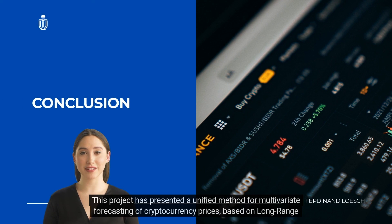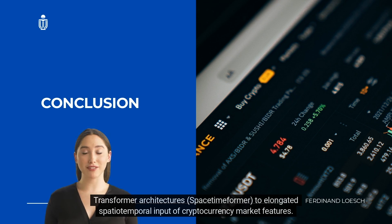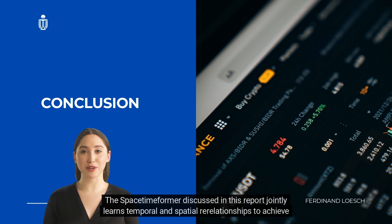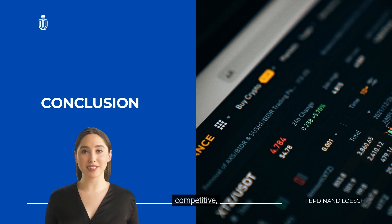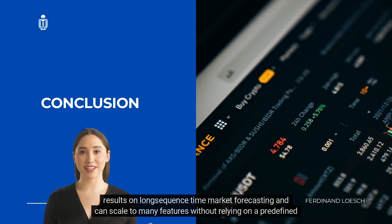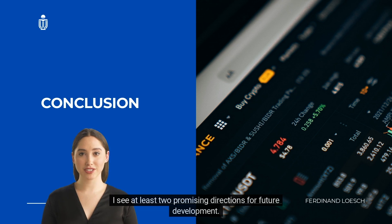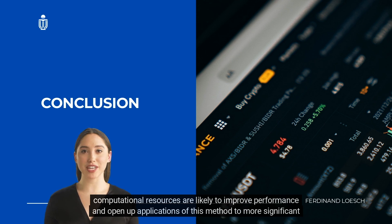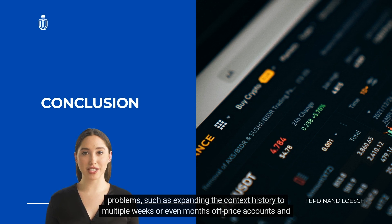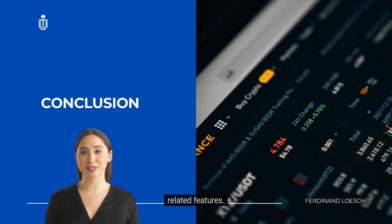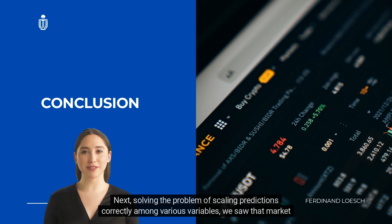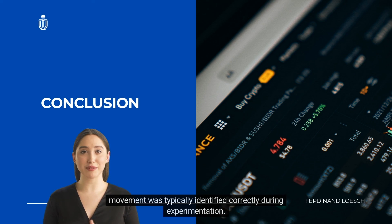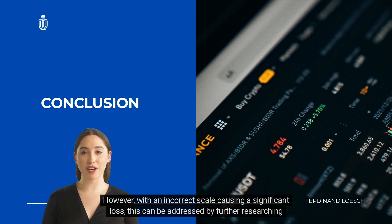This project has presented a unified method for multivariate forecasting of cryptocurrency prices based on long-range transformer architectures — the Spacetime Former — applied to elongated spatio-temporal input of cryptocurrency market features. The Spacetime Former jointly learns temporal and spatial relationships to achieve competitive results on long-sequence time series market forecasting and can scale to many features without relying on a predefined graph. Two promising directions for future development are: first, continued research into long-range transformers with smaller memory footprints and increased computational resources; and second, expanding context history to multiple weeks or months of price data and related features.